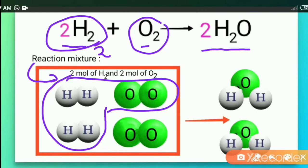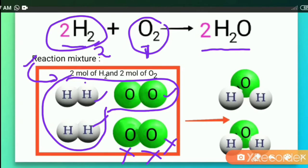According to the balanced equation, two moles of hydrogen react with one mole of oxygen, but in the reaction mixture we have taken two moles of each. So from these amounts, only two moles of hydrogen react with one mole of oxygen, meaning one mole of oxygen remains. This remaining oxygen molecule is not taking part in the chemical reaction.